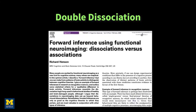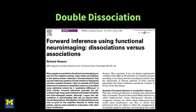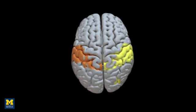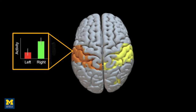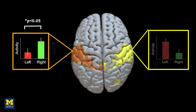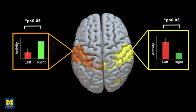Even without lesion studies, we can still establish dissociations using functional neural imaging. According to Richard Henson's 2006 paper, this is best done through measuring qualitative or significant differences. Simply finding a quantitative difference in the BOLD response between two conditions does not in itself suggest that a region is selective for condition A and not condition B. A stronger test is to compare them directly using a paired samples t-test. To further bolster your claim about selectivity, you should select a control region and run the same tests — if you find the opposite pattern, this is evidence of a double dissociation: two regions showing qualitatively different patterns of activity.